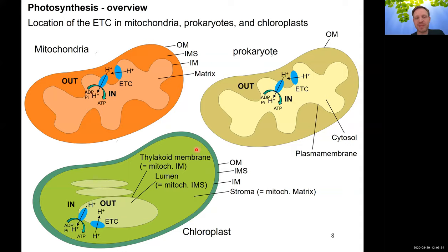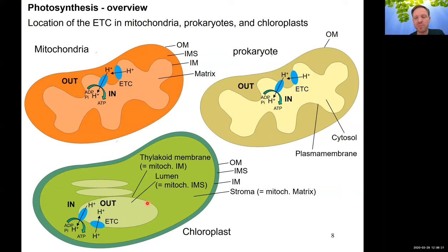This comparison supports the endosymbiotic hypothesis: there is genetic and biochemical evidence that heterotrophic organisms engulfed photosynthetic prokaryotes, and these became chloroplasts. The thylakoids evolved from the membranes of those engulfed prokaryotes.